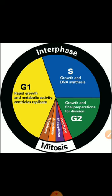Next, cell division helps in reproduction. Lower organisms like bacteria and amoeba form new daughter cells by cell division only. This occurs by mitotic cell division. But in higher forms like humans, there are special types of cells present in the reproductive organ that undergo a special type of cell division — that is meiosis.